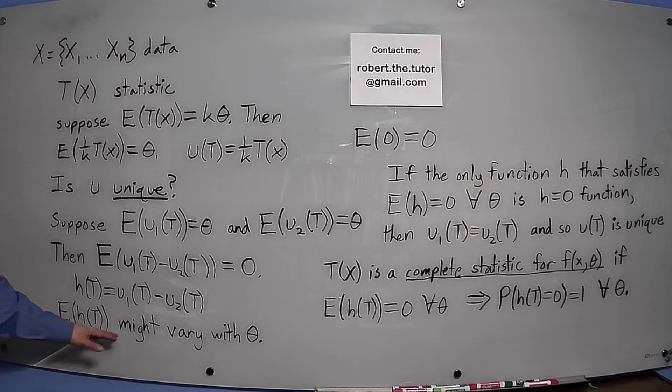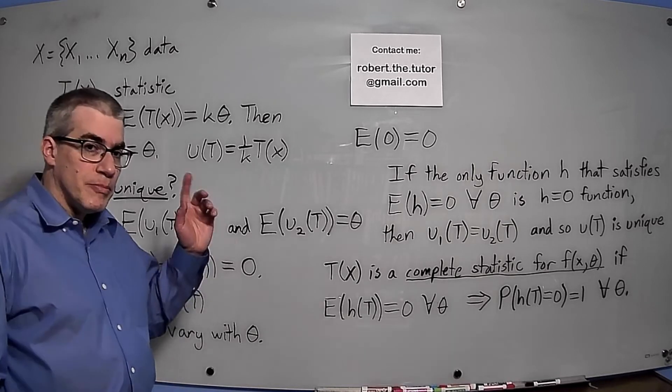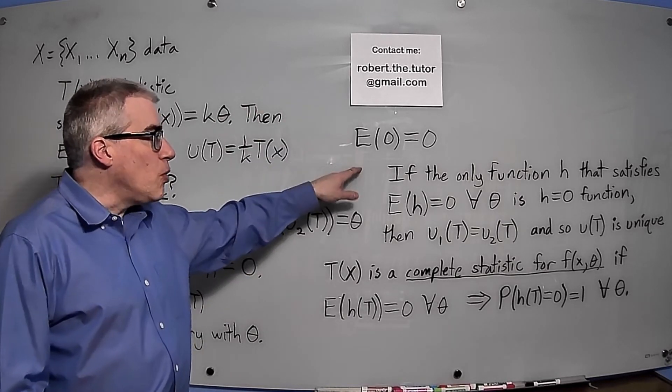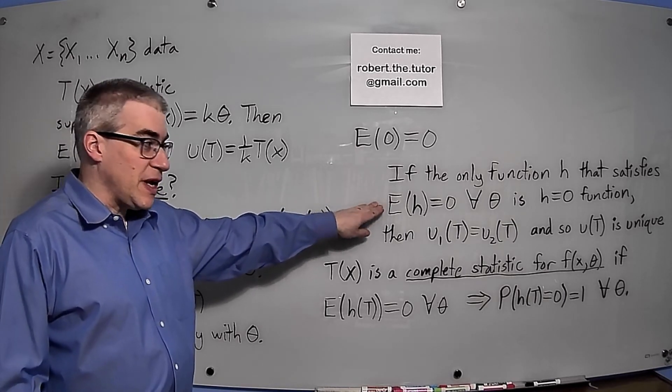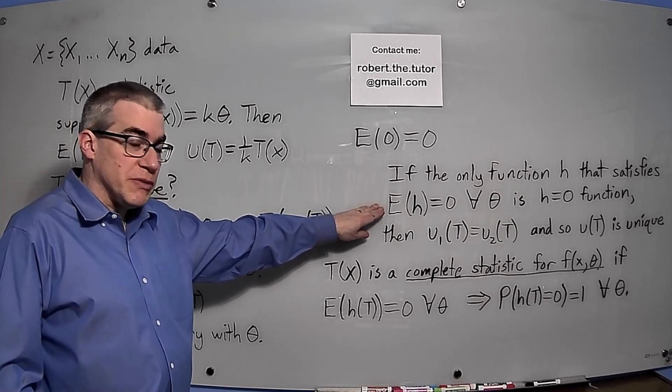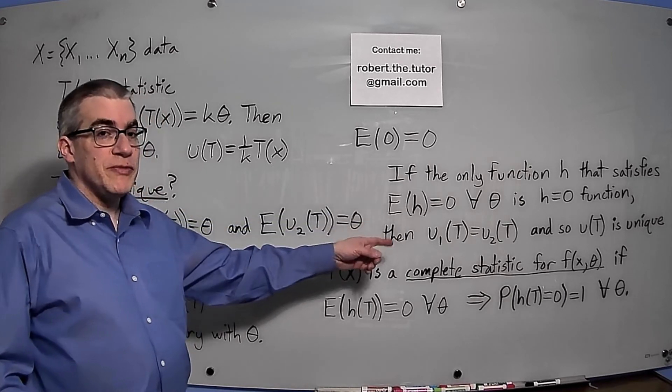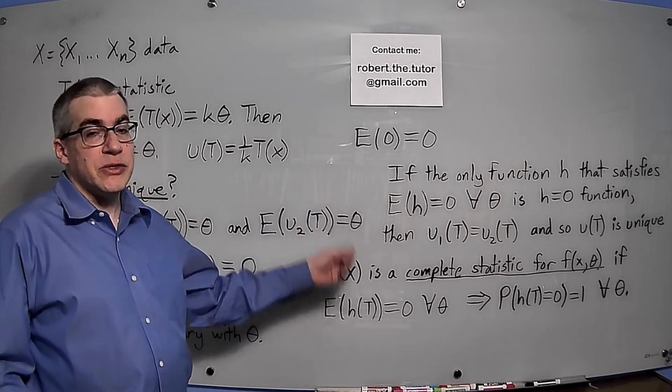E(h(T)) might vary with θ. But if the only function h that satisfies E(h) equals 0 for all θ is the function h equals 0, then u₁(T) has to equal u₂(T), and so u is unique.